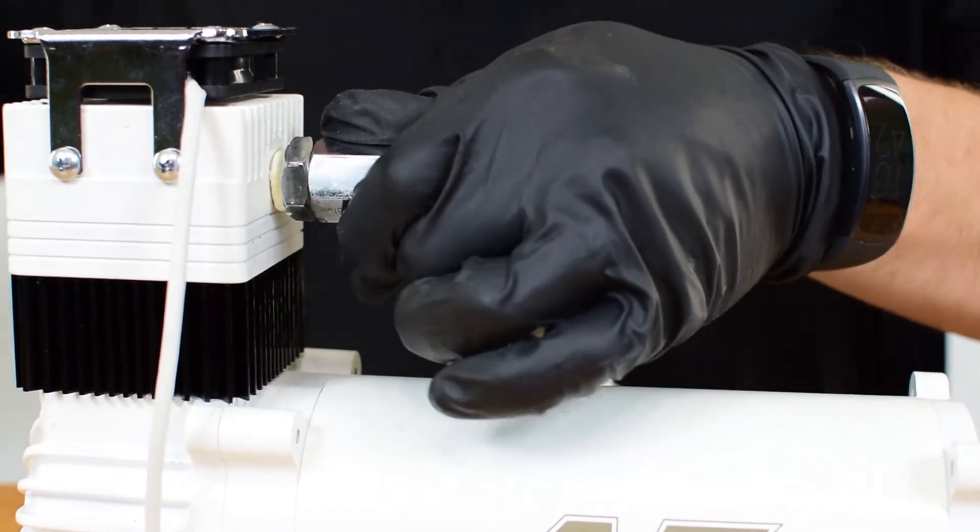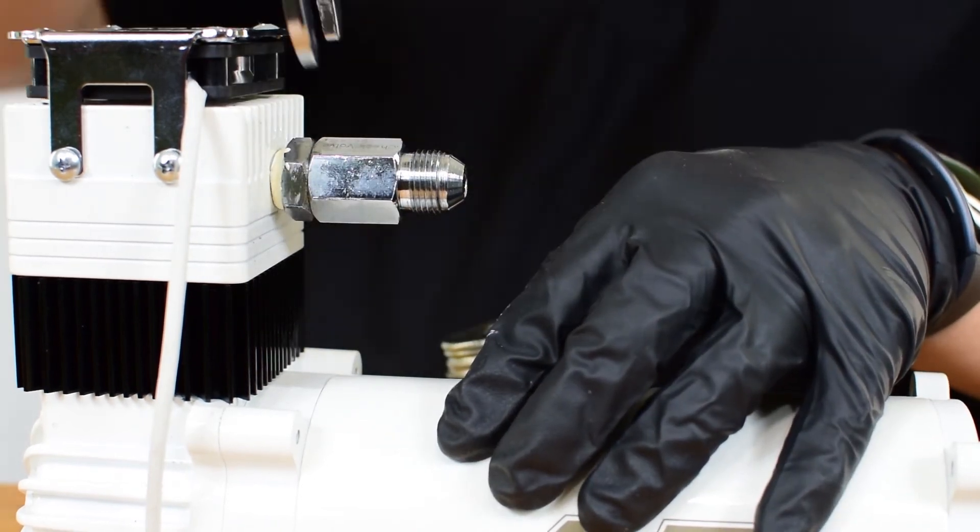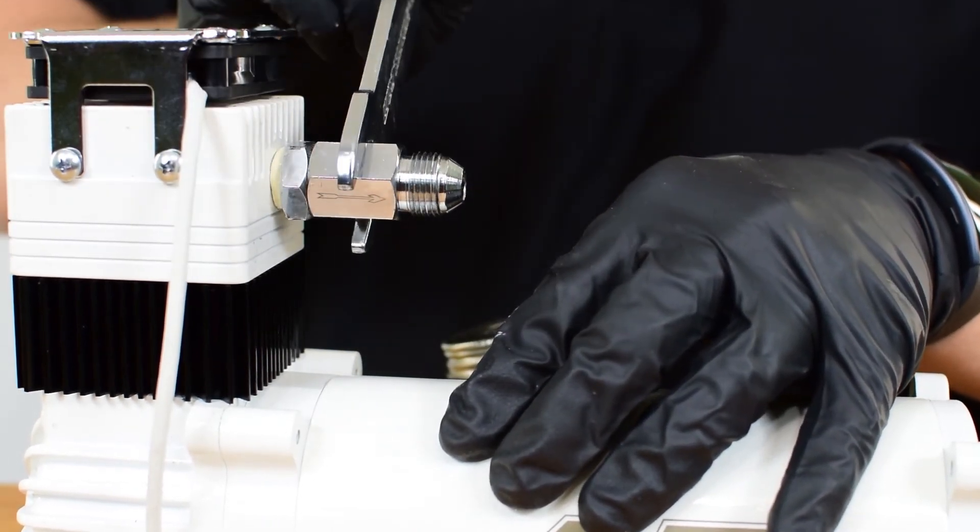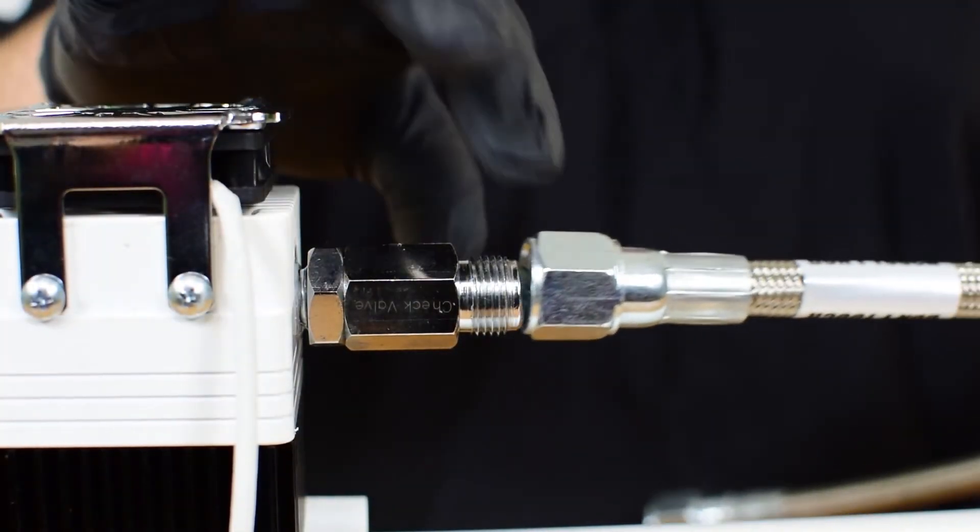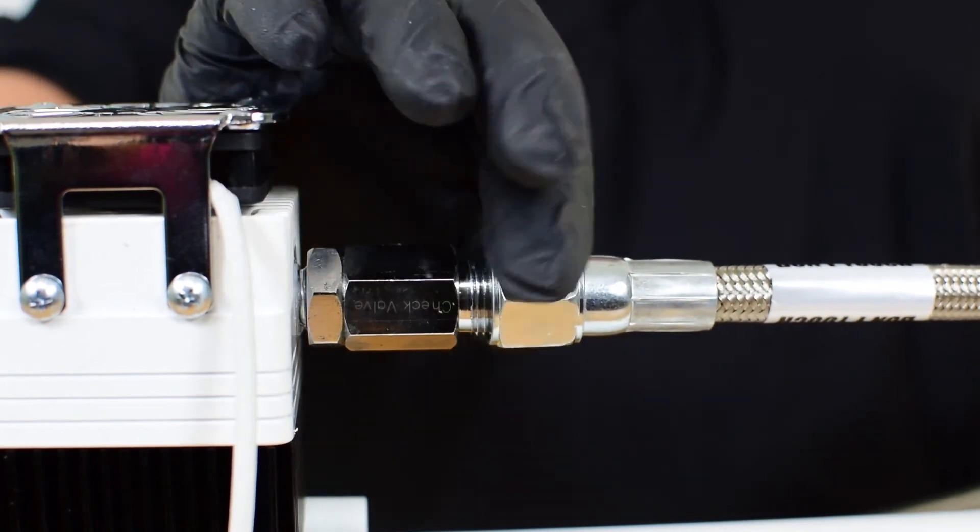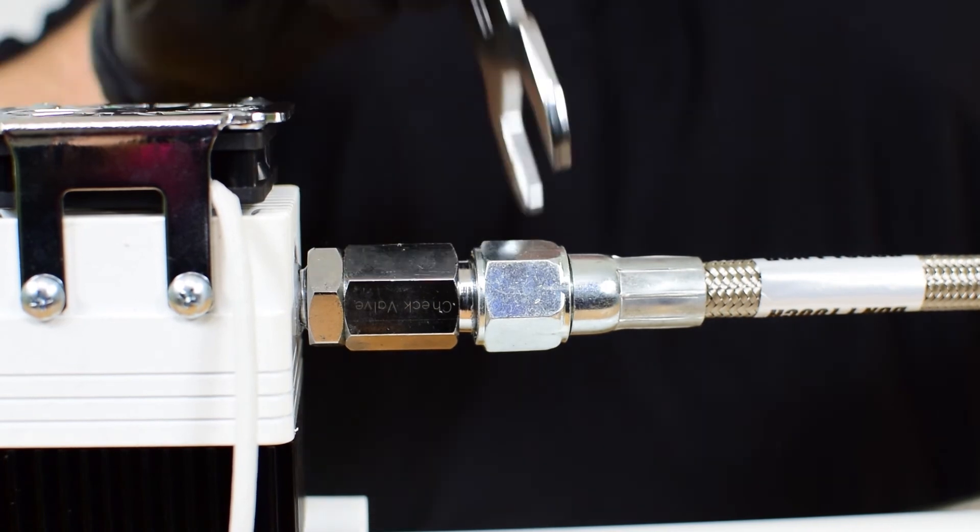It is important if you over tighten this step, you could risk cracking the head. You can now grab your leader hose and reattach it to the check valve. And tighten it down with your wrench.